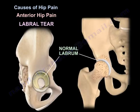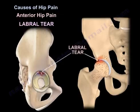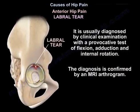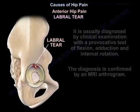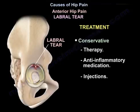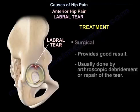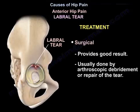Anterior hip pain can also result from a labral tear. It is usually diagnosed by clinical exam with a provocative test of flexion, adduction, and internal rotation, and the diagnosis is confirmed by an MRI arthrogram. Treatment can be conservative with therapy, anti-inflammatory medications, or injections. Surgical treatment provides good results, usually done by arthroscopic debridement or repair of the tear.